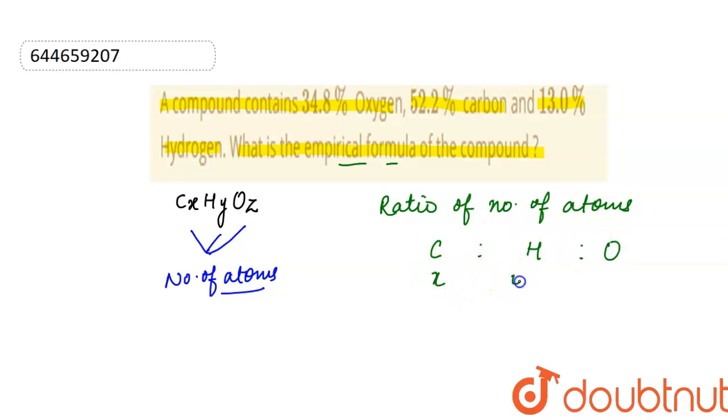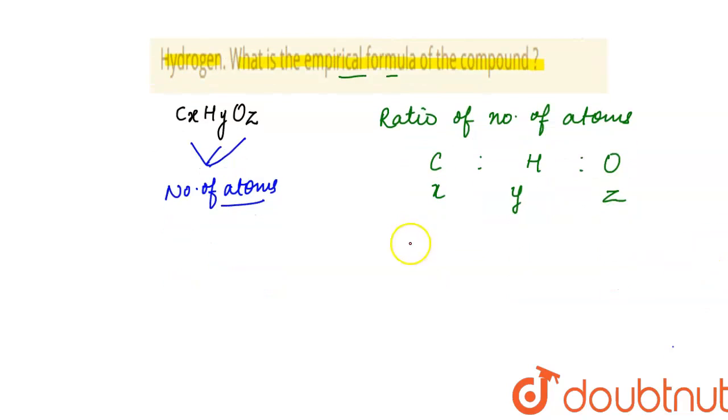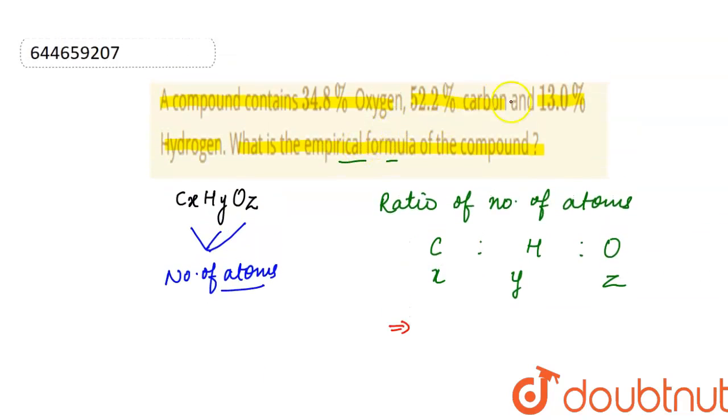So number of atoms can be calculated as given mass—that is carbon 52.2%, its molar mass is 12. Hydrogen 13%, its molar mass is 1.